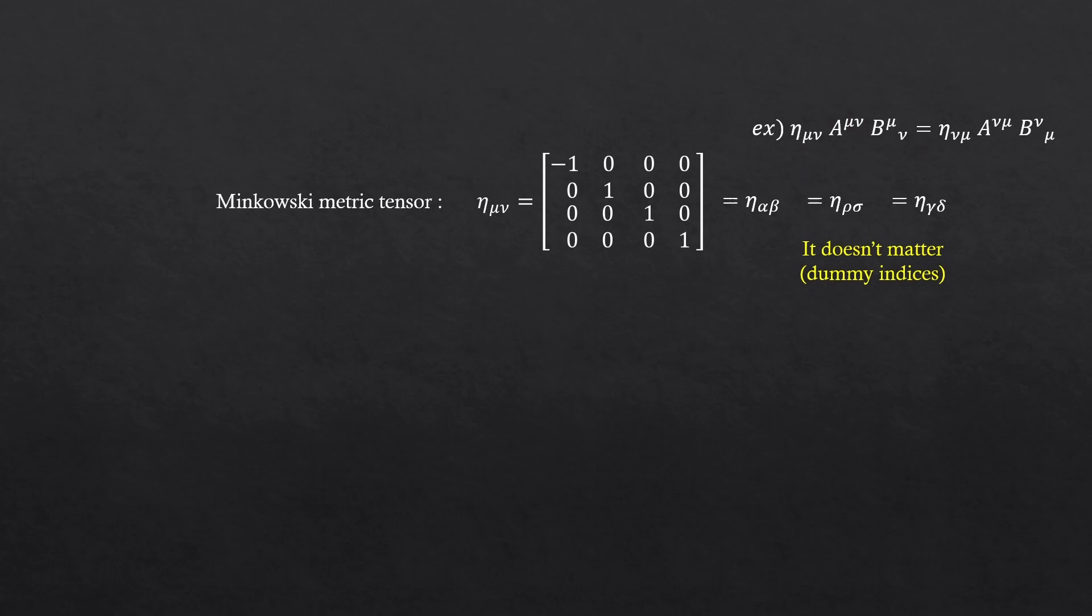By the way, that was a covariant tensor, because the indices are at the bottom. Now we have the Minkowski metric tensor with the indices at top, so contravariant form. But the tensor looks pretty much the same.